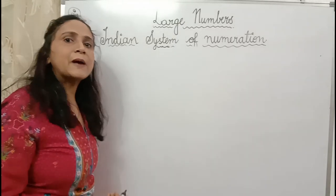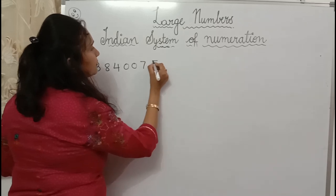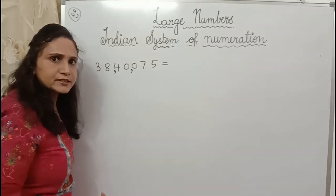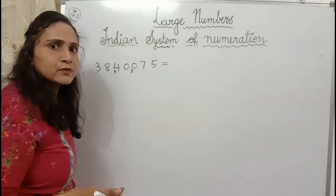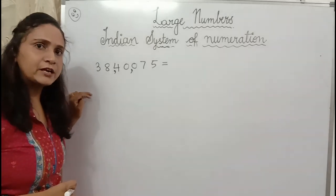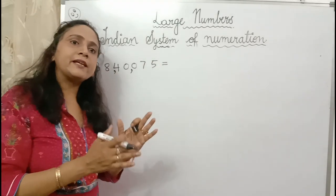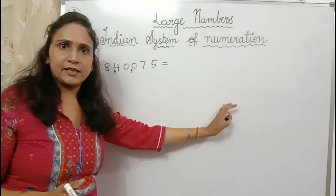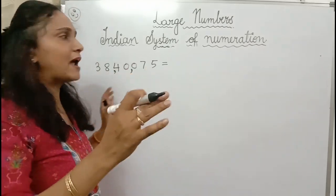Now if you have to write the expanded form — for example, the number 38,40,075. If you have to expand this number, expansion can be done in two ways: one in numbers and one in words. What is expansion? You are writing the place values of each digit. When you combine them, you get the same number again. The equals sign means the number doesn't change — it is just written in expanded form.